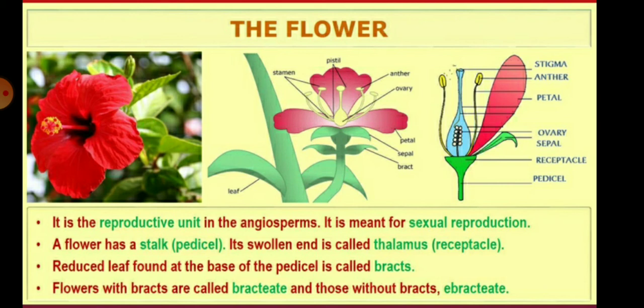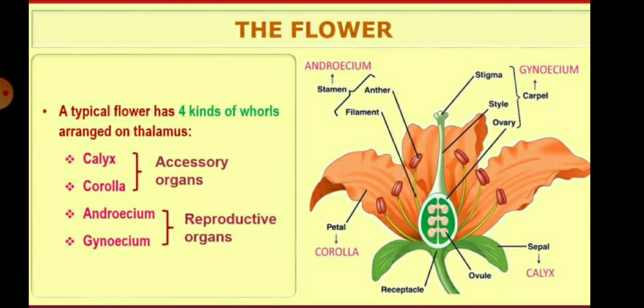Flowers with bracts are called bracteate, and those without bracts are called ebracteate. Mainly there are four whorls arranged on the thalamus. First is the calyx, second is corolla, third is androecium, and the fourth is gynoecium. The calyx and the corolla are called the accessory organs, and the androecium and the gynoecium are called the reproductive organs. You can see in this picture the reproductive organs and the accessory organs.